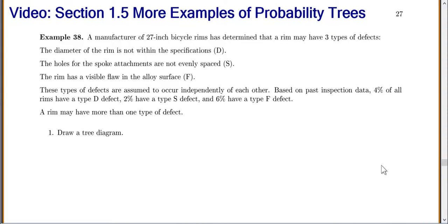Let's do two more examples about probability trees. Let's say we have a manufacturer of 27-inch bicycle rims that has determined a rim may have three types of defects.